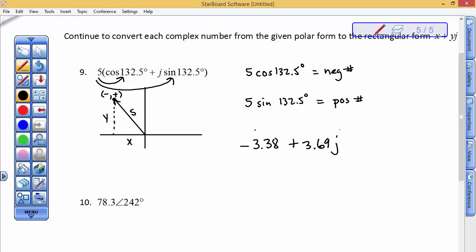And that is equivalent to this polar form, but this is just in rectangular form. Again, I expected this one to be a negative value. And I expected this one to be a positive value. And I expected them to be about the same in size. Yep, so value anyway.